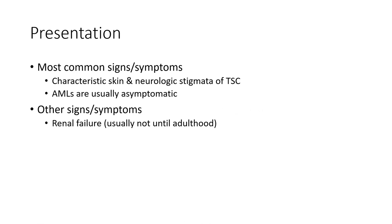Presentation — most common signs and symptoms include characteristic skin and neurologic stigmata of TSC. Angiomyolipomas are usually asymptomatic. Other signs and symptoms include renal failure, though usually not until late.